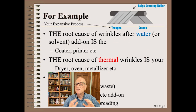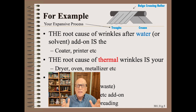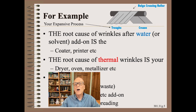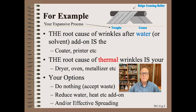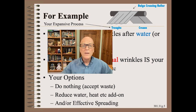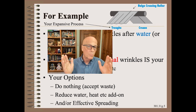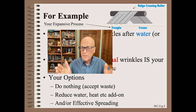Let us take a closer look at these two very common sub-cases. In the first case, the root cause of the wrinkles is the width expansion due to water add-on. In the second case, the root cause is the width expansion due to heat addition. Your option list is short and sweet, or maybe not so sweet. You can do nothing, you can reduce water or heat depending on the sub-case respectively, and/or you can add effective spreading, which is a whole chapter unto itself. However, to think that you can fix expansion wrinkles with spreaders alone may be more than limiting — it could be naive.